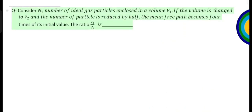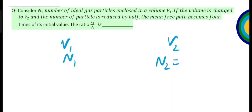Next problem: consider N1 number of ideal gas particles enclosed in volume V1. If the volume is changed to V2 and the number of particles is reduced by half, the mean free path becomes 4 times its initial value. Initially volume V1, particles N1; finally volume V2, particles N2 equals N1 by 2. Initially mean free path lambda1, finally lambda2 equals 4 lambda1.